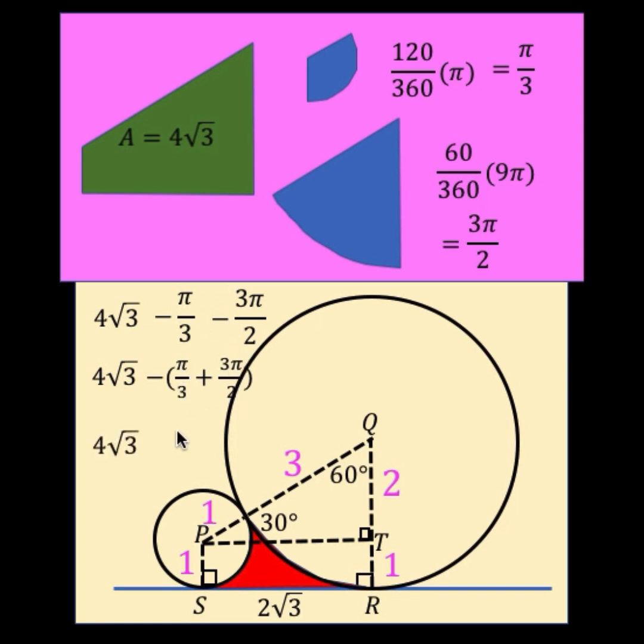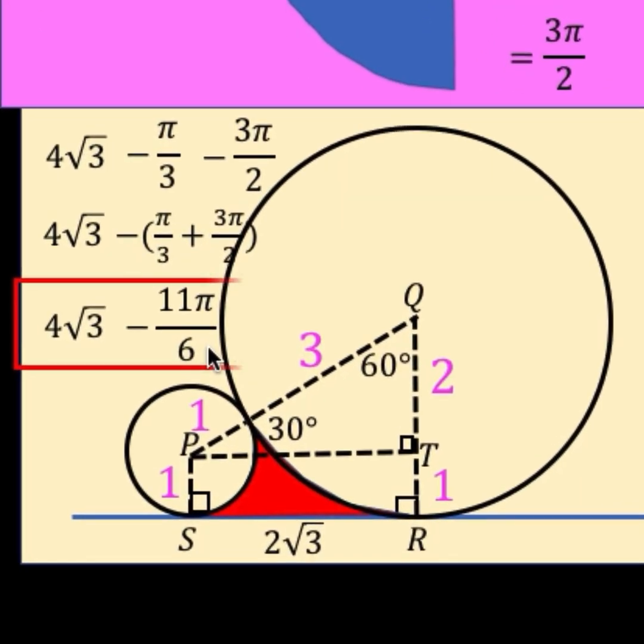When you distribute you go back to the original, and then pi over 3 plus 3 pi over 2 gives us 11 pi over 6. So finally our answer is 4 square root of 3 minus 11 pi over 6 for the area of this shaded region, and that is our final answer.